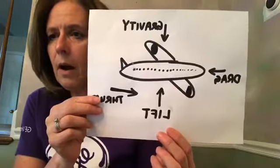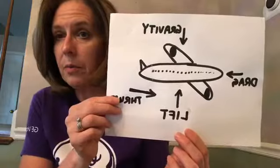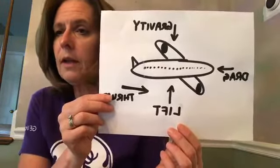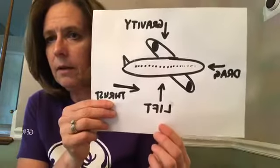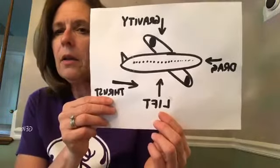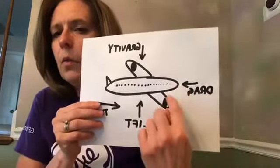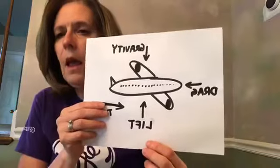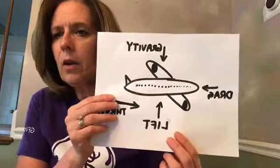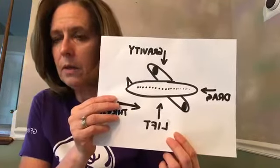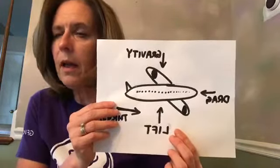The heavier something is, the more gravity there is. Gravity is the reason why when you fly on an airplane they limit how much luggage you can bring, because the more luggage you bring the more gravity, and then it takes more fuel to overcome that. Now lift is the opposing force to gravity. When the airplane is going through the sky very fast, the wind blows over the wings, causing the air pressure on top of the wing to be less than the air pressure under the wing.